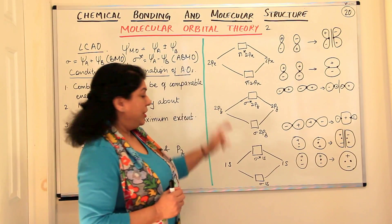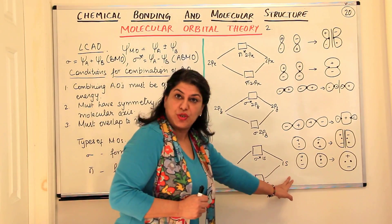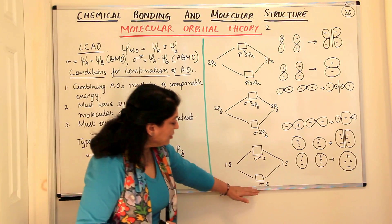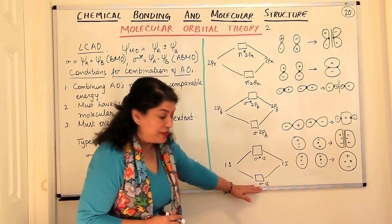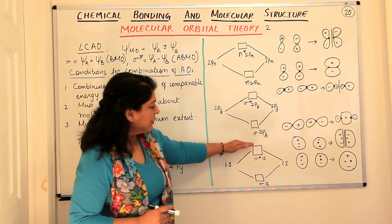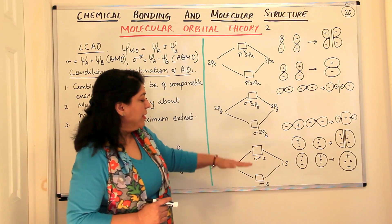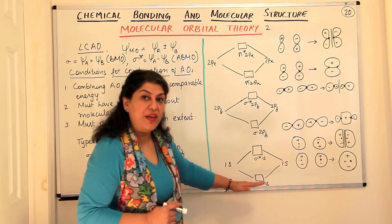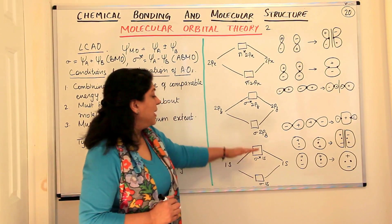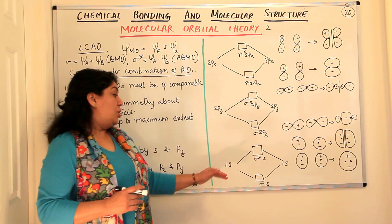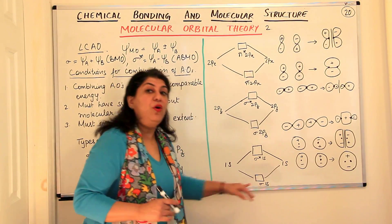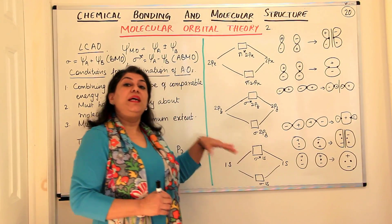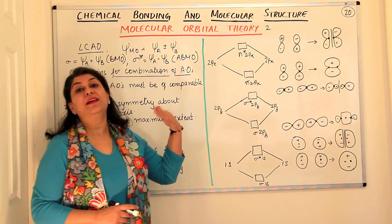These two atomic orbitals combined linearly—that is why we call it linear combination. When constructive interference occurred, it resulted in the formation of bonding sigma 1s; when it was destructive, it resulted in the anti-bonding sigma 1s. Bonding sigma 1s has energy lower than the atomic orbitals and anti-bonding has energy greater. The bonding molecular orbital leads to stability of the molecule, while the anti-bonding molecular orbital leads to instability.